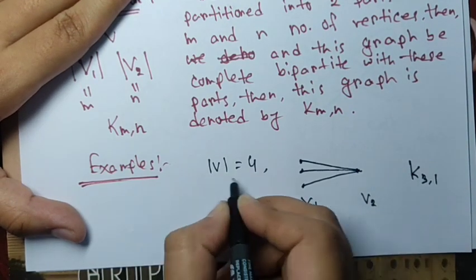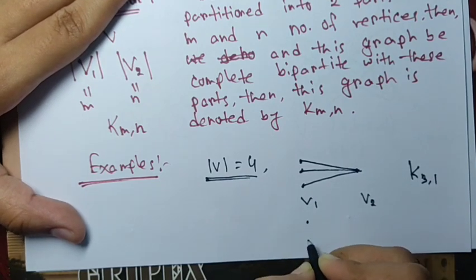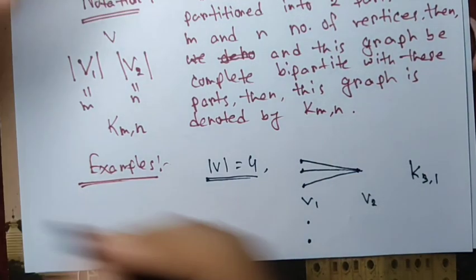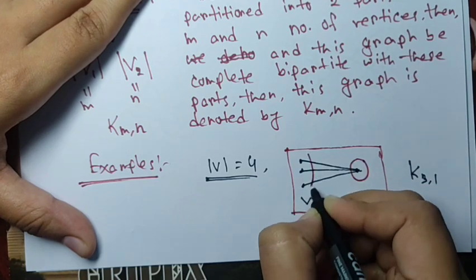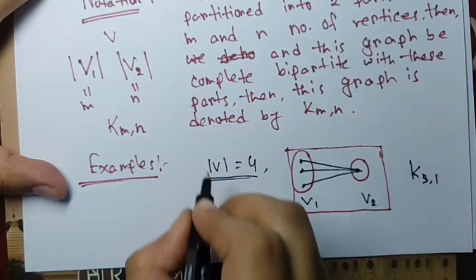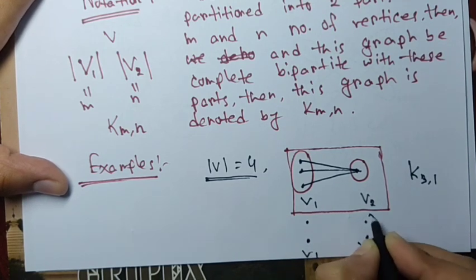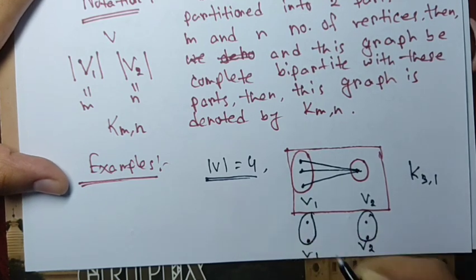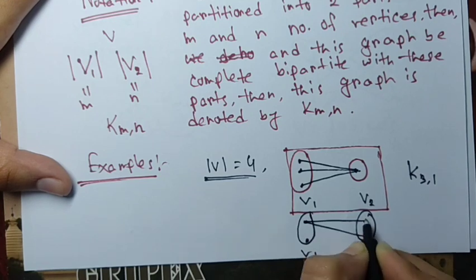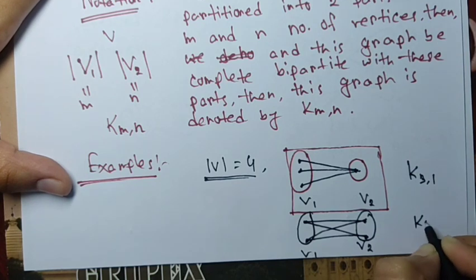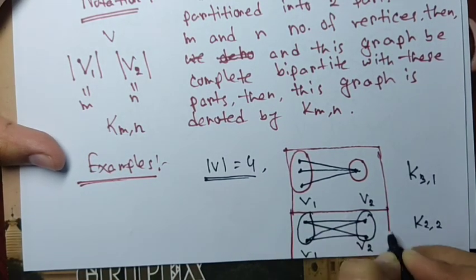With the same four vertices we can consider another complete bipartite graph: take V1 with two vertices and V2 with two vertices. No two vertices within the same part are adjacent, but each vertex of V1 is adjacent to each vertex of V2, giving four edges. This graph is denoted K_{2,2} since each part contains exactly two vertices.